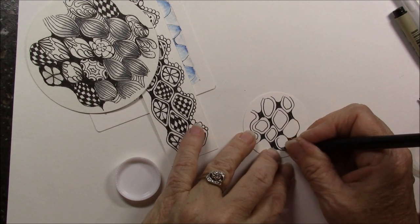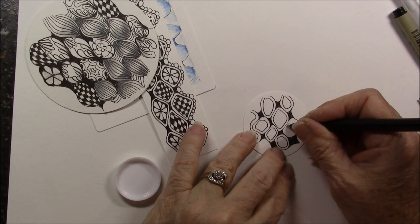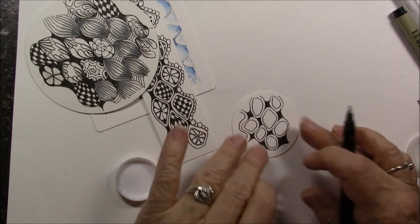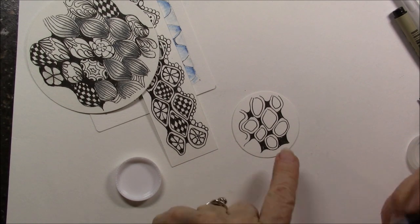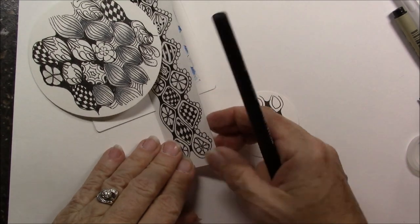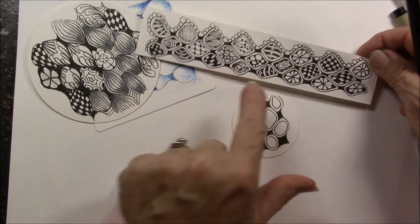I kind of did this one fast. I would have probably made that echo a little bit smaller. And that's how I got the area to do the bookmark.